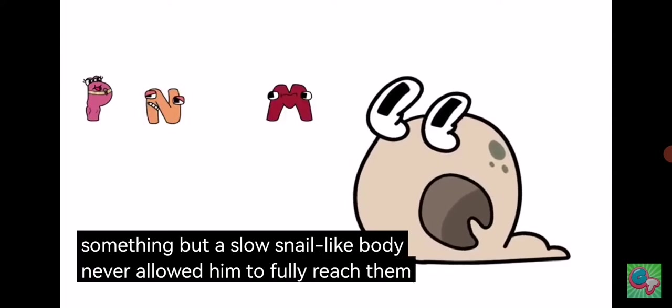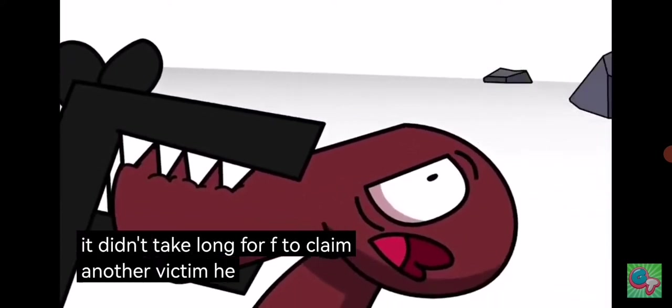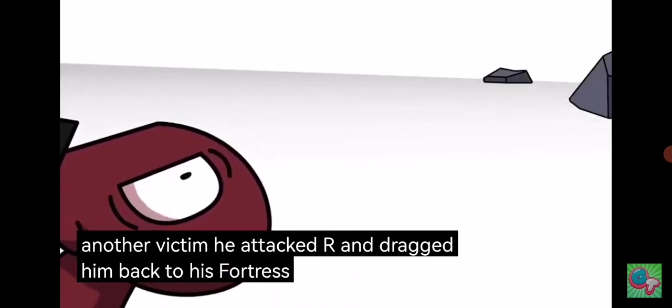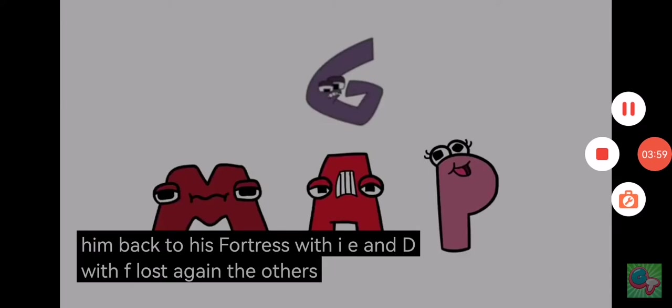It didn't take long for F to claim another victim. He attacked R and dragged him back to his fortress with I, E, and D. With F lost again, the others needed a direction.